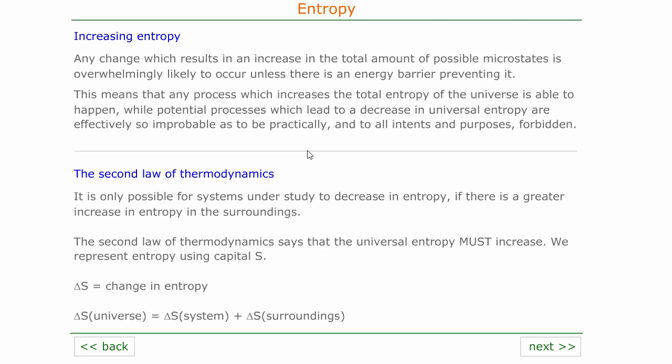The reverse is certainly impossible — it is impossible to have a system which reduces the total entropy of the universe. This gives us the second law of thermodynamics, which says that it is only possible for systems under study to decrease in entropy if there is a greater increase in entropy in the surroundings. The second law of thermodynamics states that universal entropy must increase. For this reason, sometimes people refer to entropy as nature's arrow or time's arrow, because it's the only law in physics which says that things move towards the future.